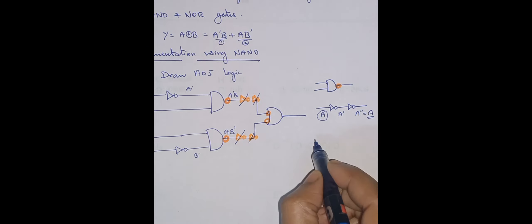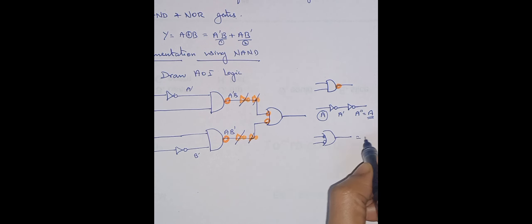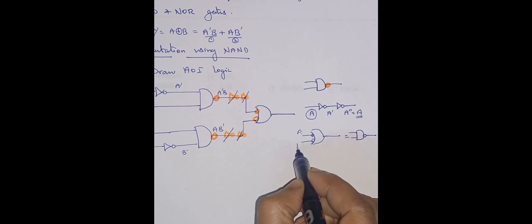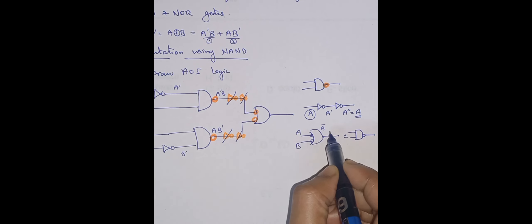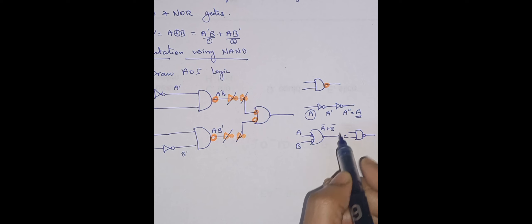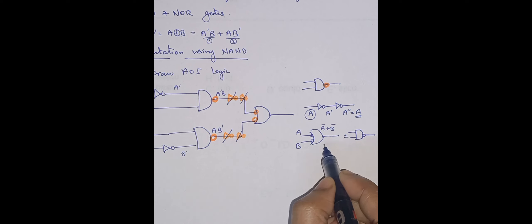Then we know already this bubbled OR gate is equivalent to NAND gate. Let us check this: A, B. As it is inverted, it goes as A bar. As it is OR operation, I will get this as B bar. Applying De Morgan's law, you will get A bar plus B bar is nothing but A dot B the whole bar, which is equivalent to NAND gate.